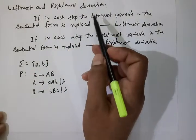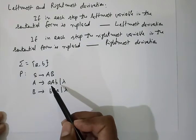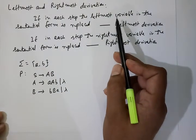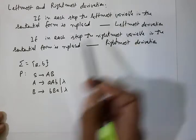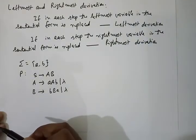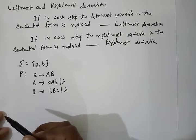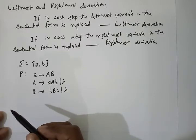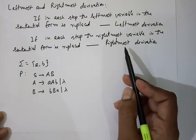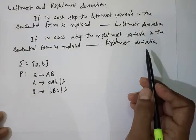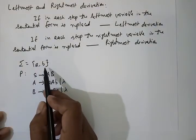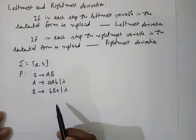Now we look at leftmost and rightmost derivation. If at each step the leftmost variable in the sentential form is replaced, it is a leftmost derivation. Similarly, if at each step the rightmost variable is replaced, it is a rightmost derivation. For example, suppose Σ = {a, b} with given production rules.